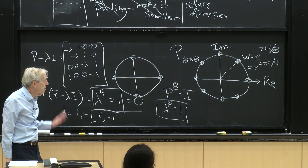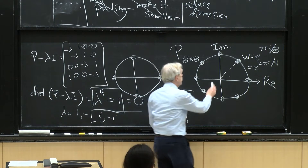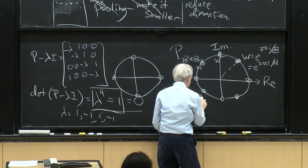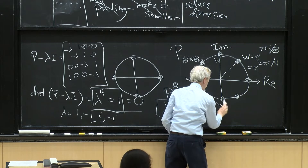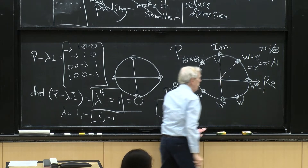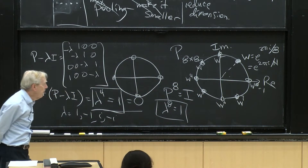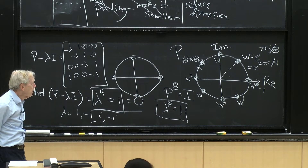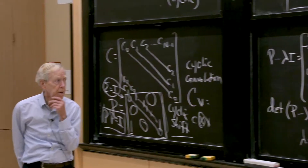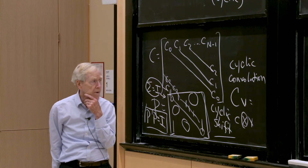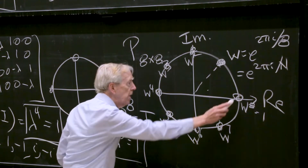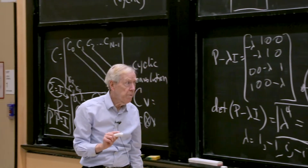The whole angle is 2π divided into eight pieces, so W = e^(2πi/8). Then we have W², W³, W⁴, W⁵, W⁶, W⁷, and W⁸ = 1. The reason I put those numbers up there is that they come into the eigenvectors as well as the eigenvalues. These eight numbers — 1 through 8 on the unit circle — are the eight eigenvalues of the matrix.